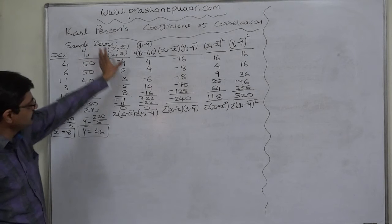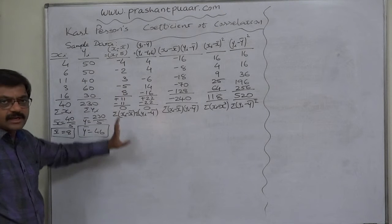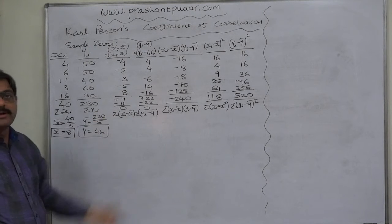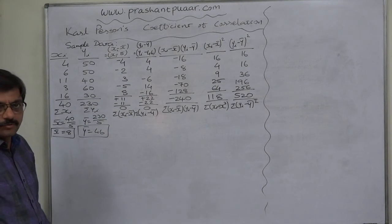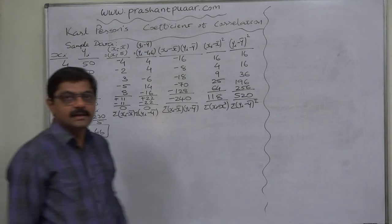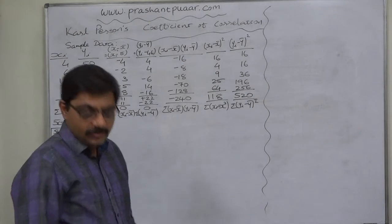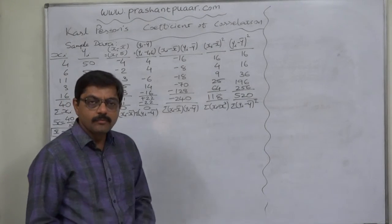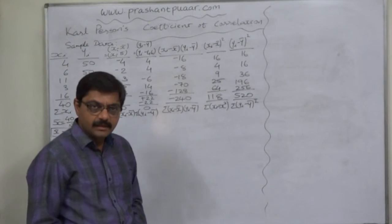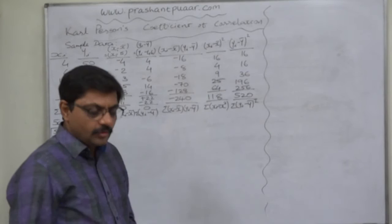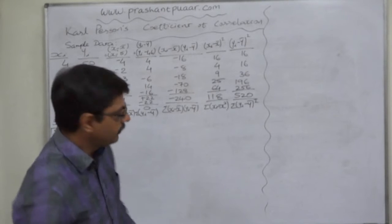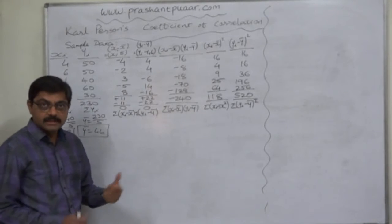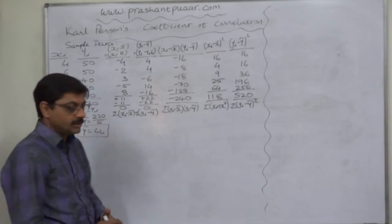That means we can verify that all these values are correct. Otherwise, we cannot have a total of 0, because from arithmetic we know that the summation of deviations from the arithmetic mean is always 0 — it must be 0.